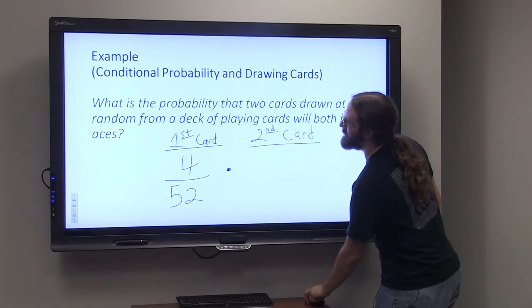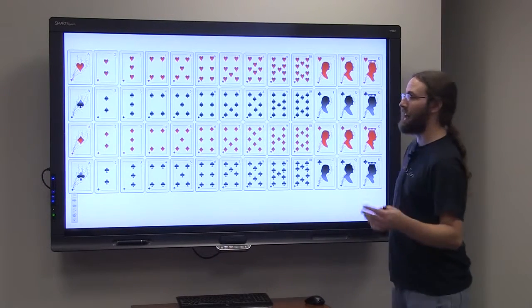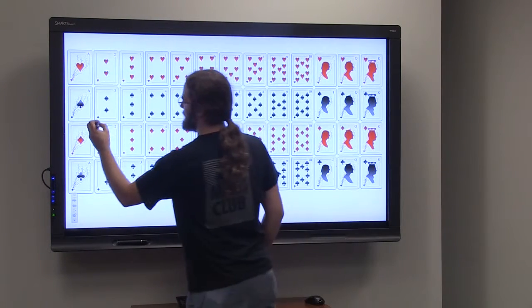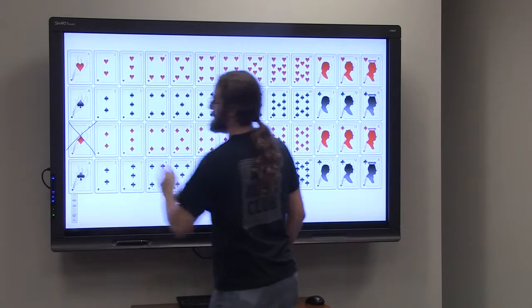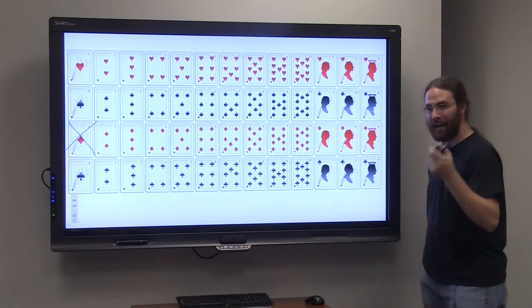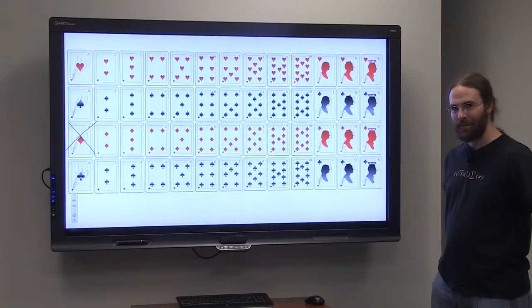So let's just say I draw an ace, let's say it's the ace of diamonds. With my first draw, I pull out the ace of diamonds. I then set the ace of diamonds to the side.